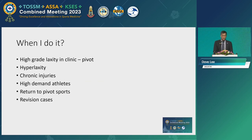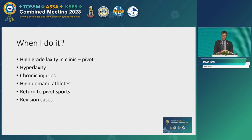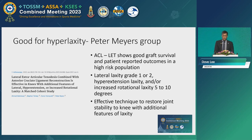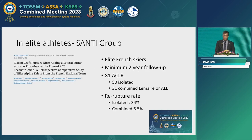When do I do an LET? If you have high-grade laxity in the clinic, if you're able to generate a pivot in the clinic, if you have hyperlaxity or a high Beighton score, chronic ACL, high-demand athletes, if they plan to return to soccer or basketball, and in revision cases. Looking at those first five or six points, it's almost most of your patients. So in primary cases I'm doing an LET in about 70–80% of cases, and in revision cases probably 100%. We know from the Australian group it's good for hyperlaxity, and even in elite athletes, adding a lateral-sided procedure protects your ACL — this is in elite French skiers from the Saintey group.